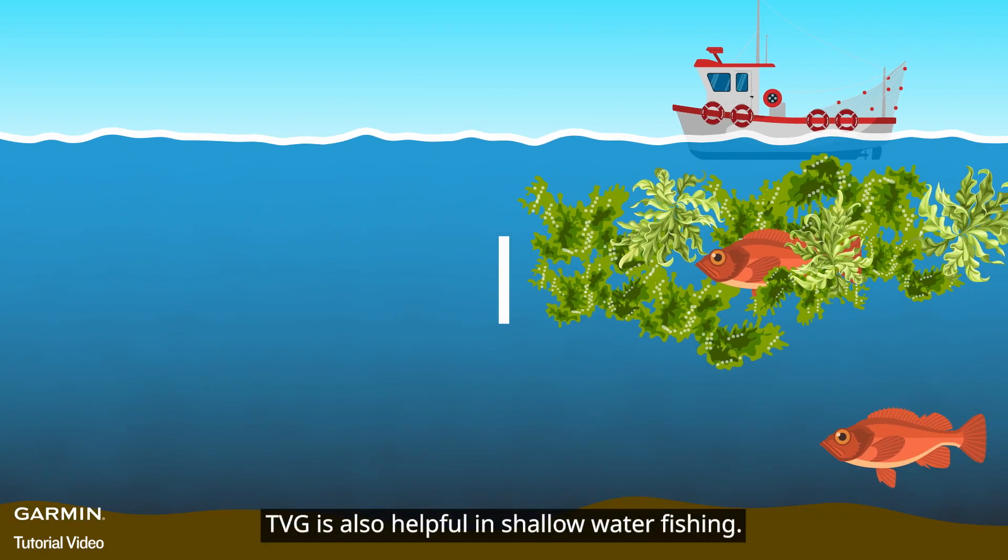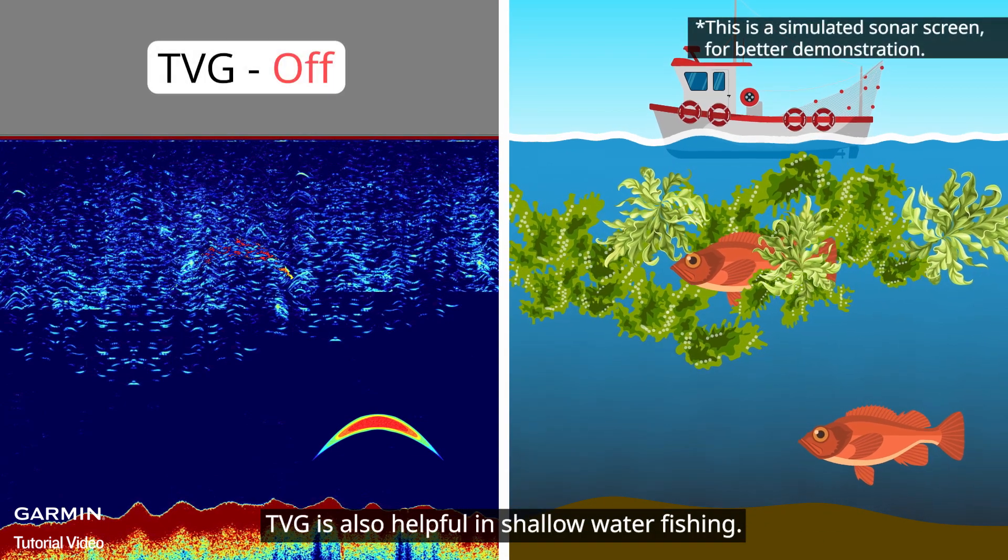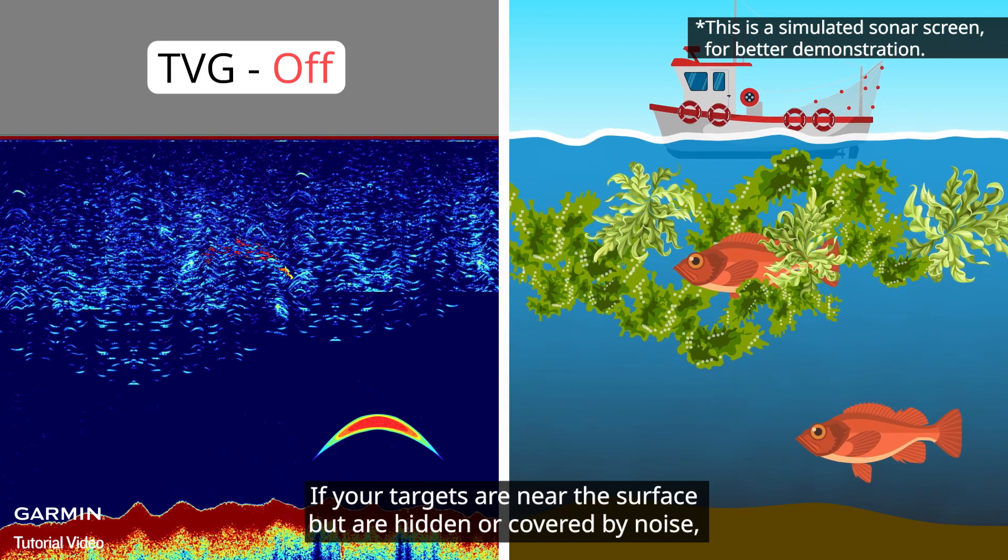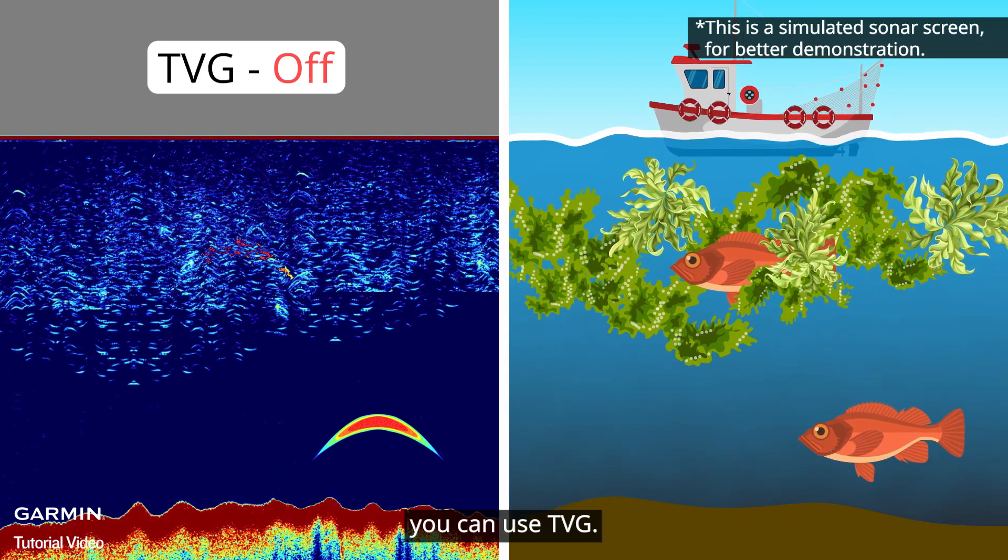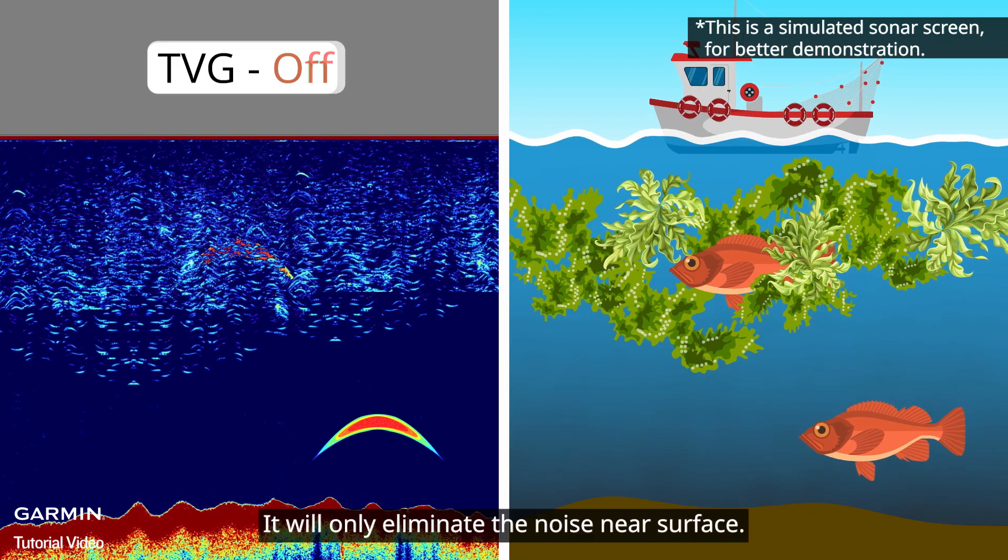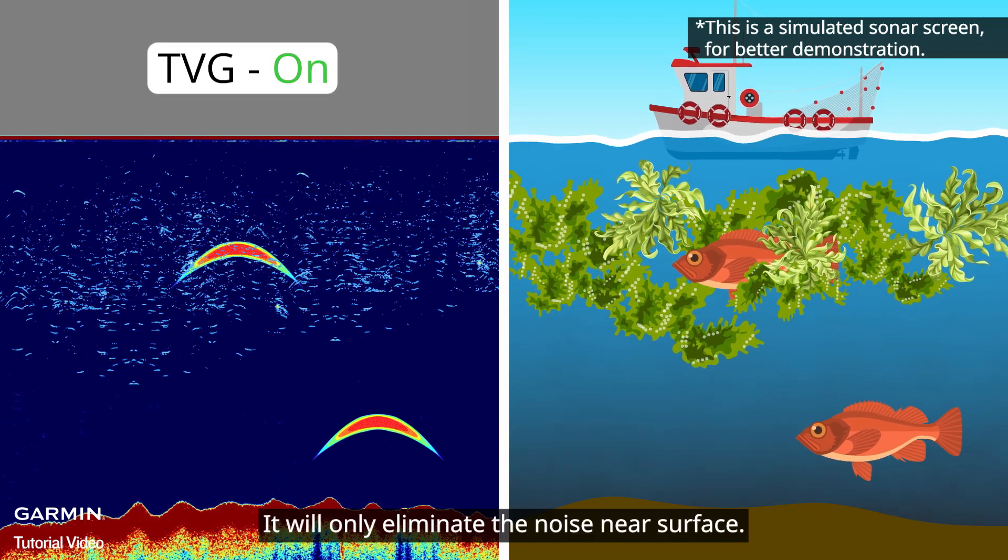TVG is also helpful in shallow water fishing. If your targets are near the surface but are hidden or covered by noise, you can use TVG. It will only eliminate the noise near surface.